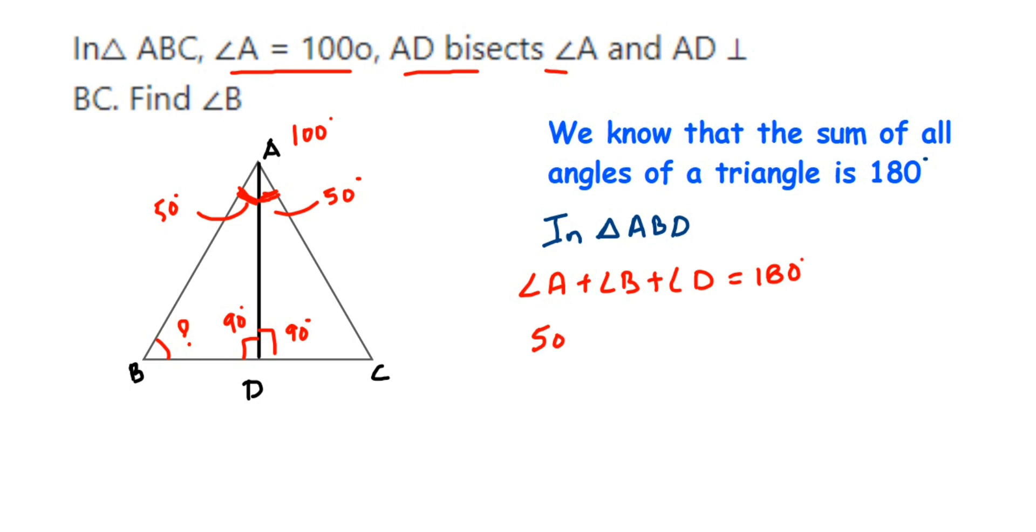angle D is 90 degrees because it is perpendicular. Now 50 plus 90 is 140, so angle B plus 140 degrees equals 180 degrees. Now we are going to transpose 140 to the other side. When 140 goes